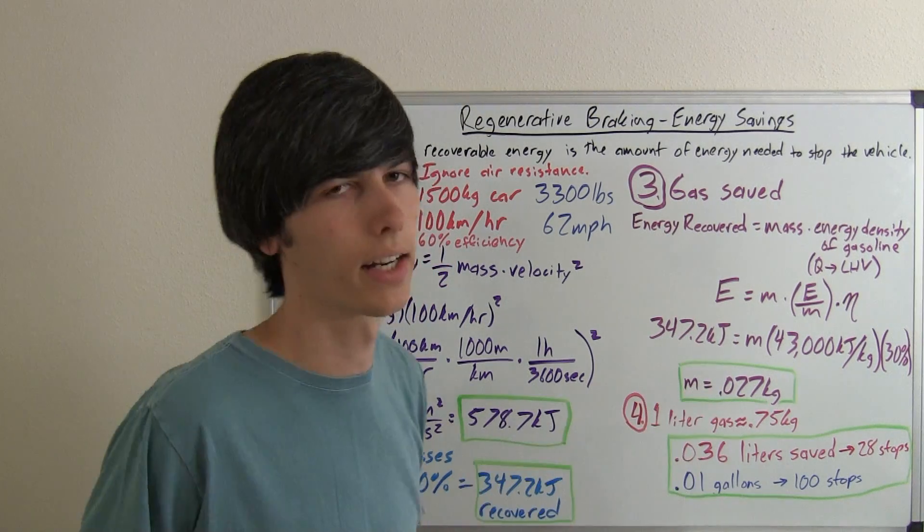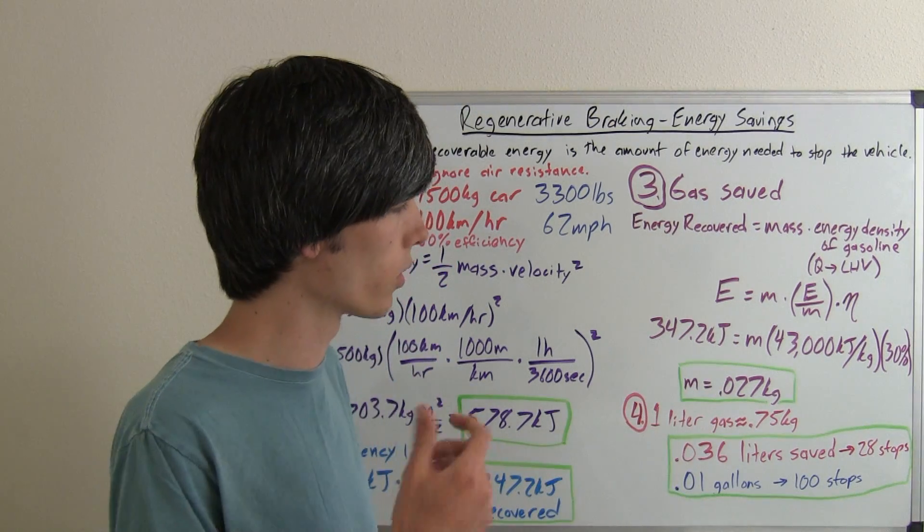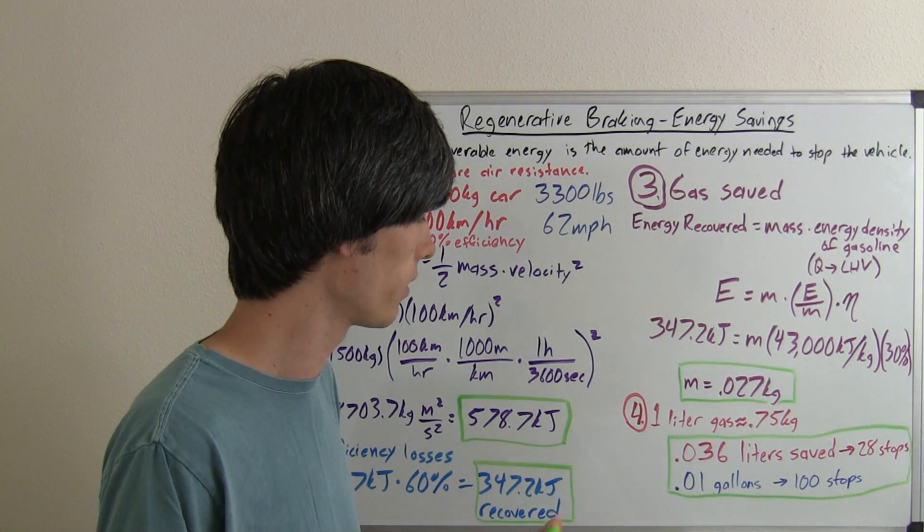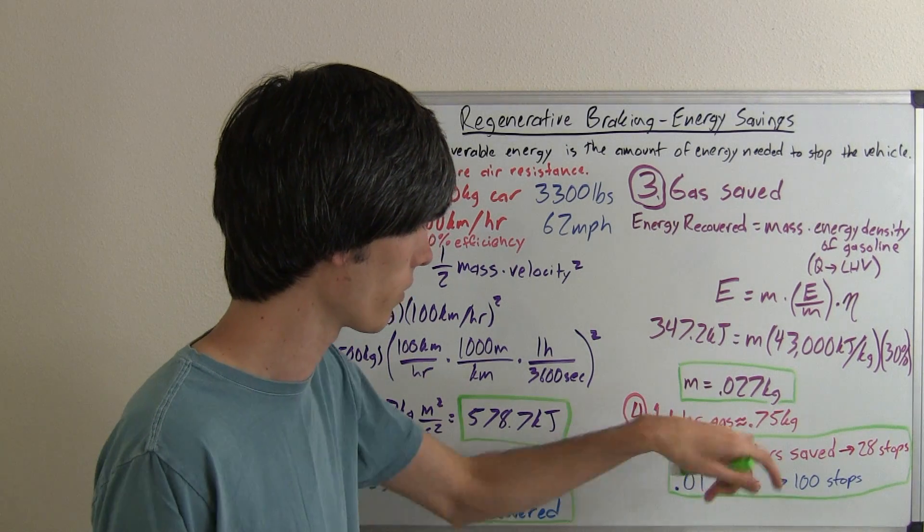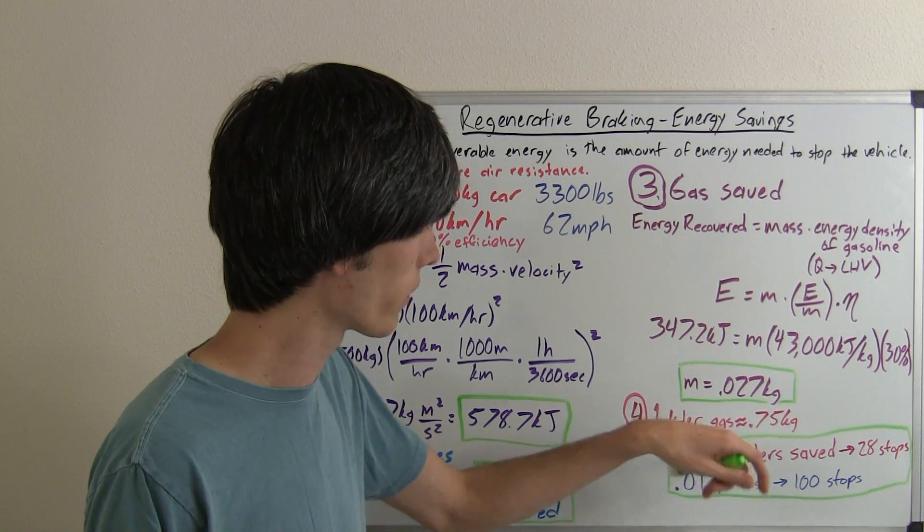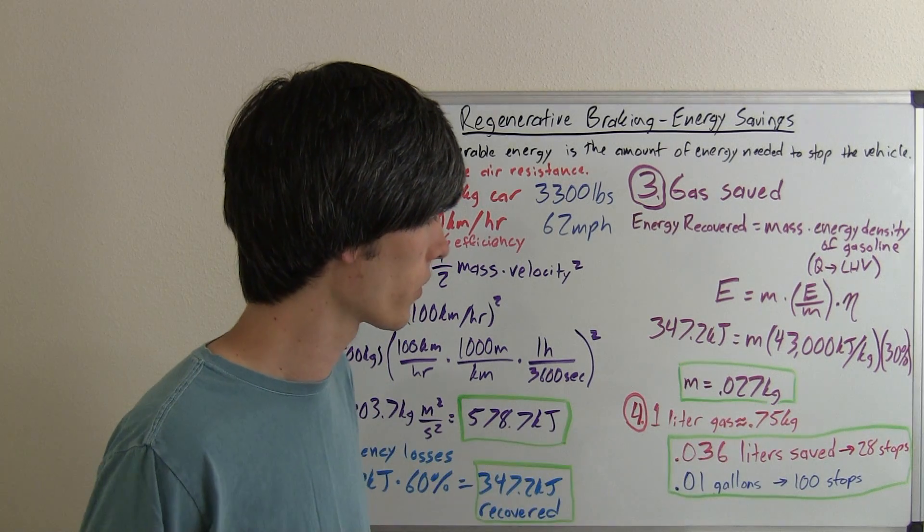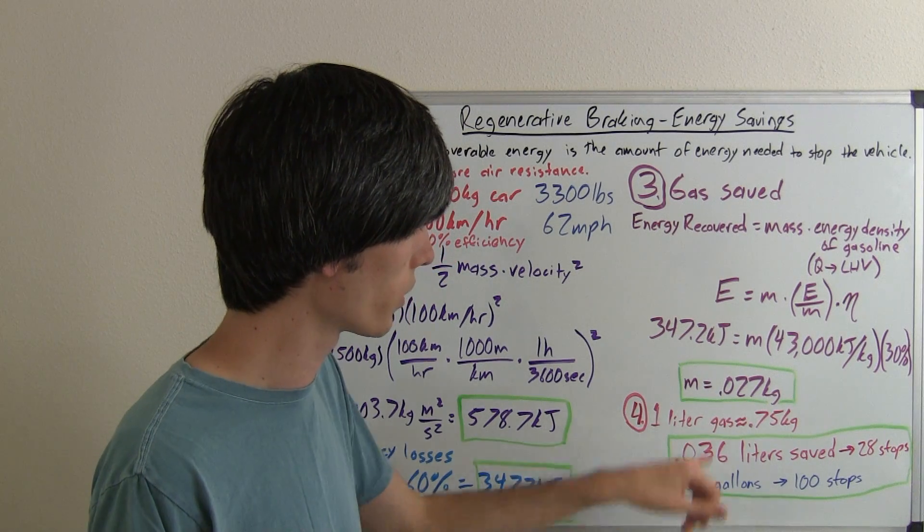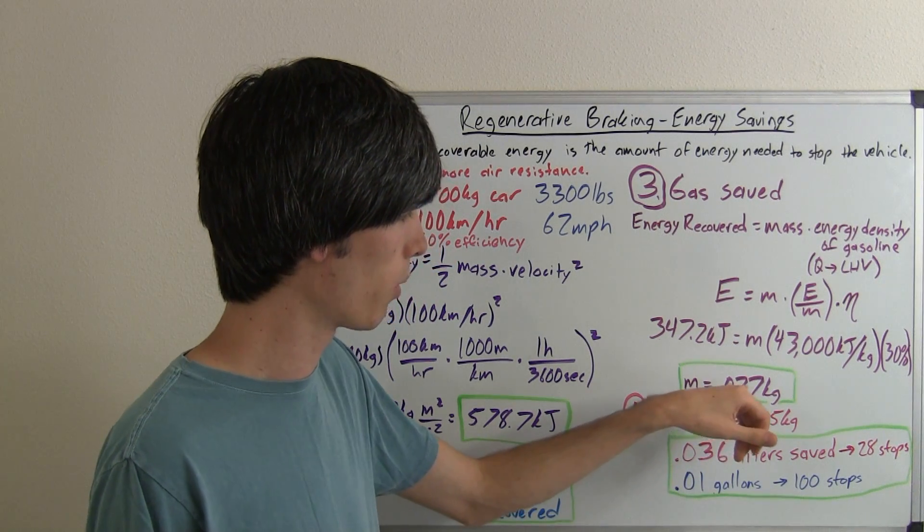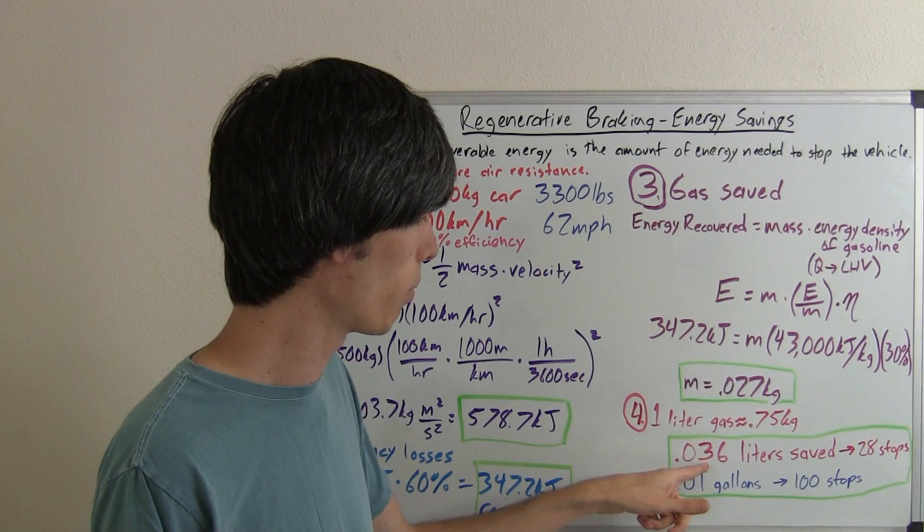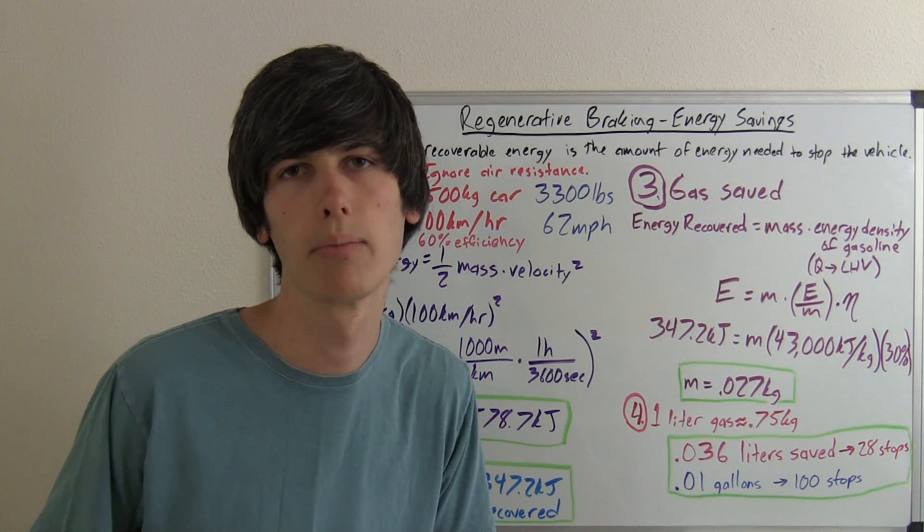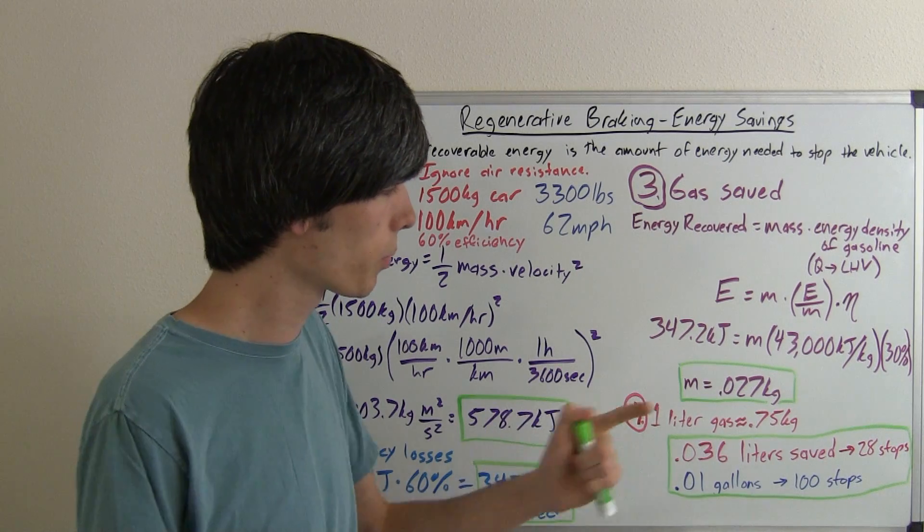So our fourth step, we've got it in kilograms. Most people don't go to the gas pump and say I want five kilograms of gasoline. That doesn't really make a lot of sense. We're just going to convert it over. So one liter of gas is about three-fourths of a kilogram. Very simple conversion. Just take this number, divide it by 0.75, and that gives you 0.036 liters saved every time you stop from 100 kilometers per hour, which is pretty cool.